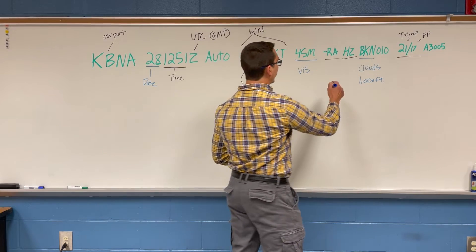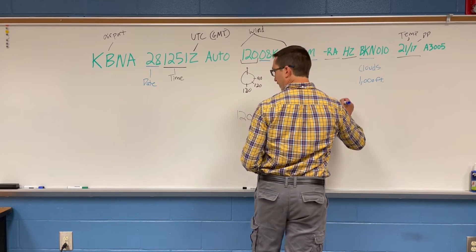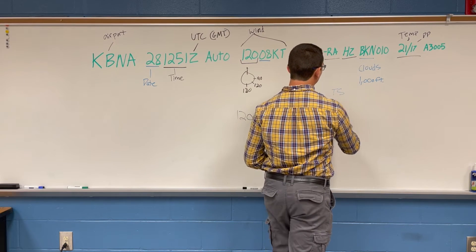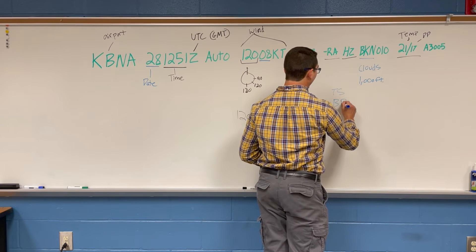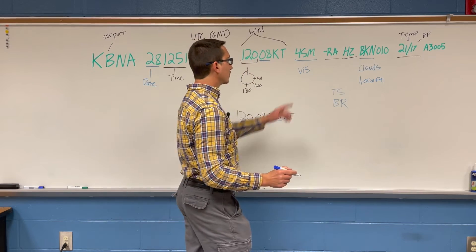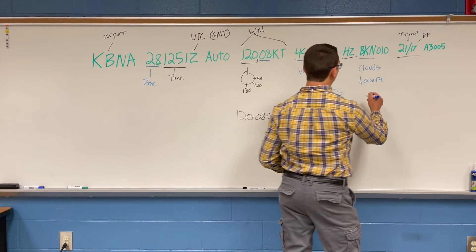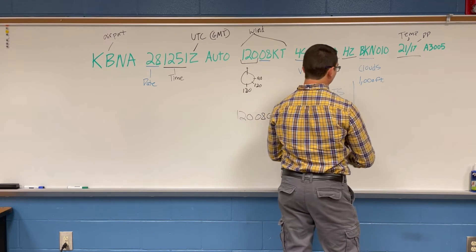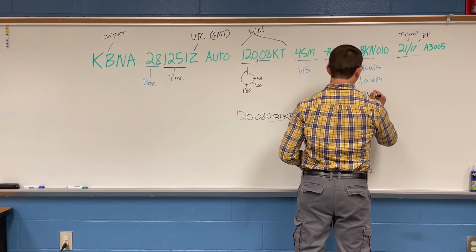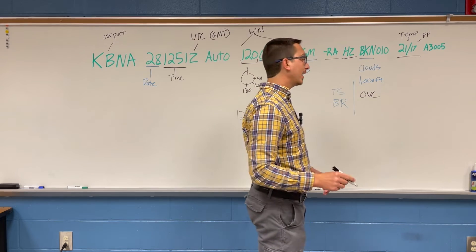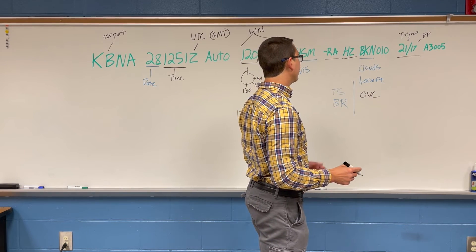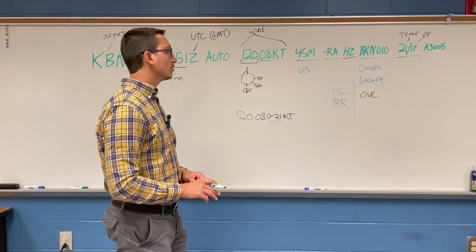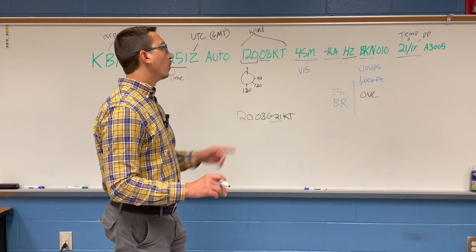Other things you might see in the weather conditions section include 'TS' for thunderstorm and 'BR' for mist. In the cloud section, you could also see scattered clouds listed. Most of these are pretty intuitive once you're familiar with the format.